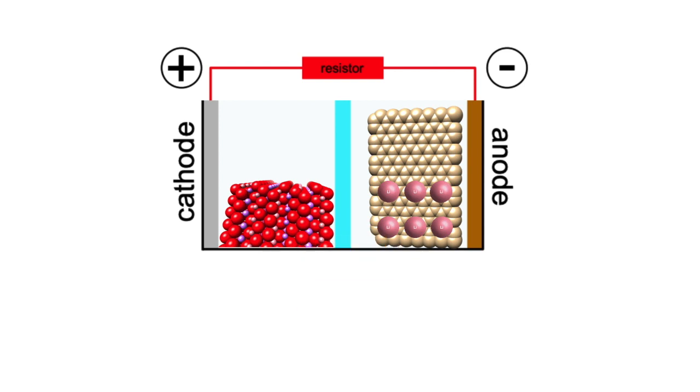At the anode, lithium atoms lose electrons to form lithium ions. The electrons are then passed through the external circuit to the cathode.